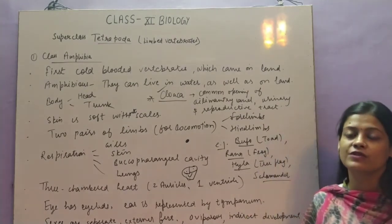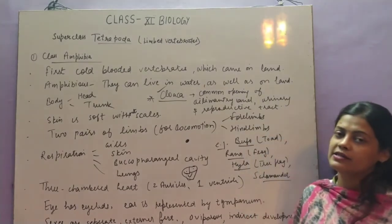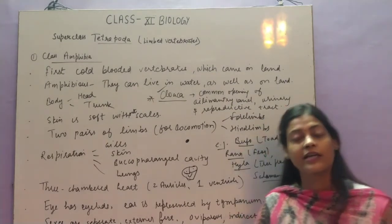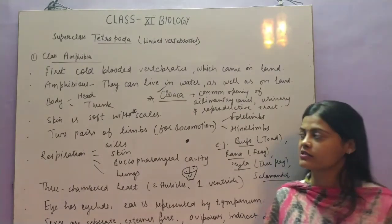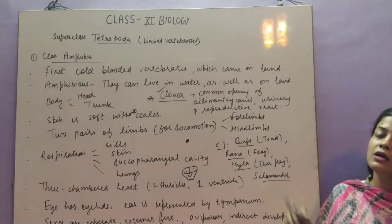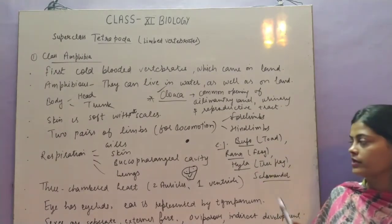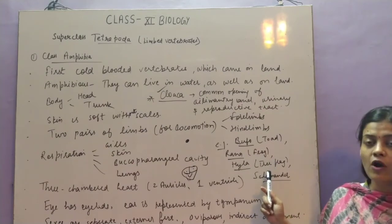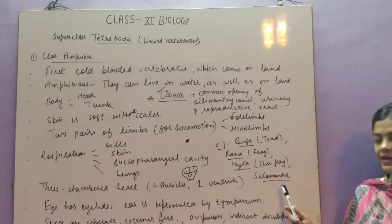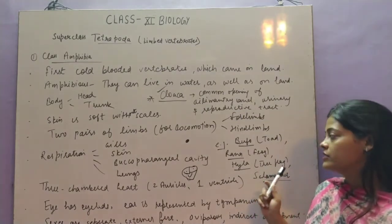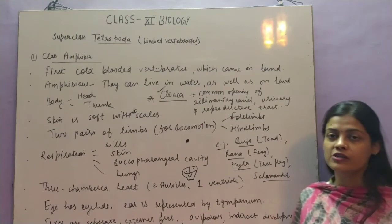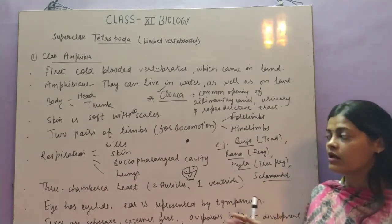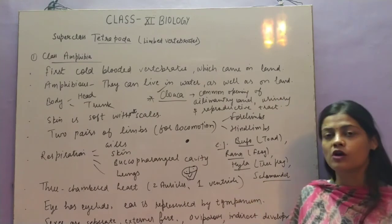Sexes are separate with different male and female. They show external fertilization by releasing eggs and sperms into water. They are oviparous and development is indirect — most show metamorphosis, that is morphological changes from the larval stage to the adult. There is also a cloaca, which is a common opening for the alimentary canal, reproductive tract, and urinary tract, with a cloacal aperture releasing waste and gametes outside.